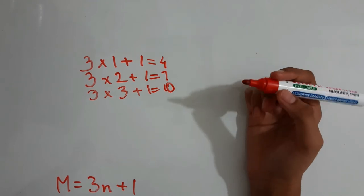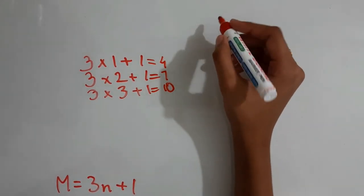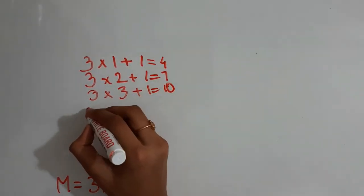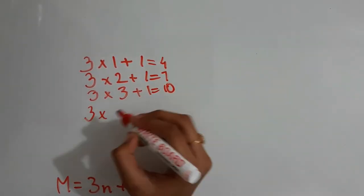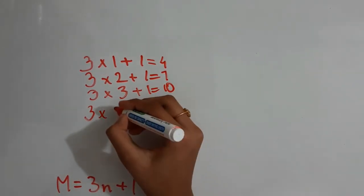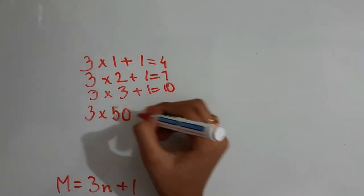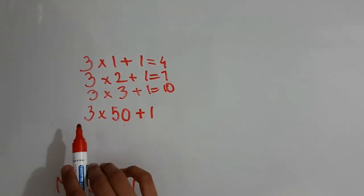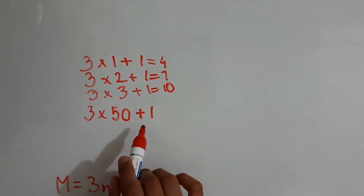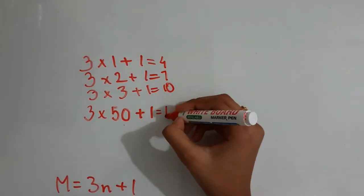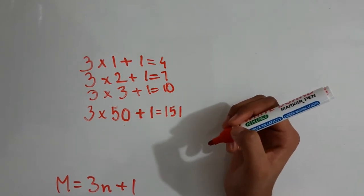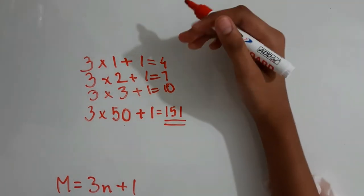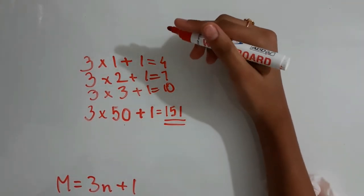Suppose you get a question to find the 50th figure. Since it's increasing by 3, we write: 3 × 50 + 1 = 150 + 1 = 151. So the 50th figure has 151 matchsticks.